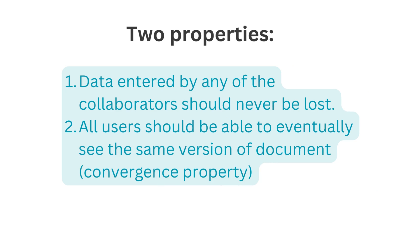Number one: the data entered by any one of the collaborators should never be lost. That means if there are two collaborators, Alice and Bob, working together on a document, none of their changes should be lost. Number two: all users should be able to eventually see the same version of the document. This is also called the convergence property — meaning all local copies of the document should eventually merge to the same version saved on the server.